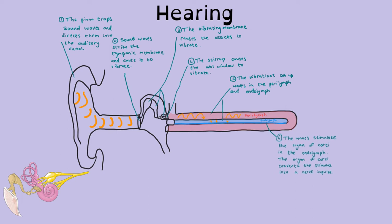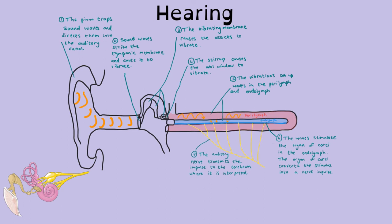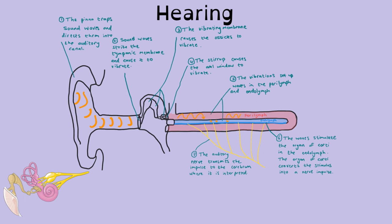The organ of Corti creates nerve impulses, and those impulses travel along the auditory nerve. Auditory means hearing — you have the optic nerve in the eye and the auditory nerve in the ear. This branch of the auditory nerve takes impulses produced by the organ of Corti to the cerebrum, where the sound will be interpreted. It's very important that you name the cerebrum, because the cerebrum interprets your senses, and the cerebrum will interpret the sound as loud or quiet, high-pitched, or pleasant or unpleasant.